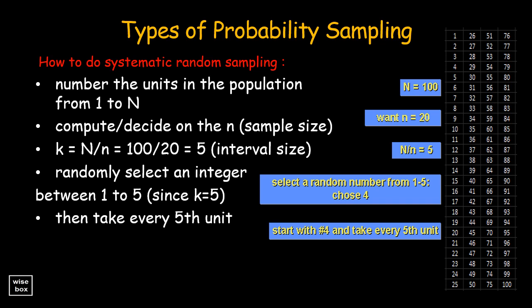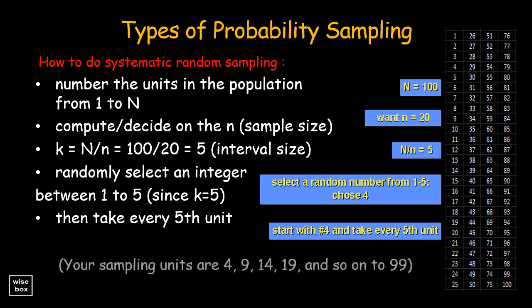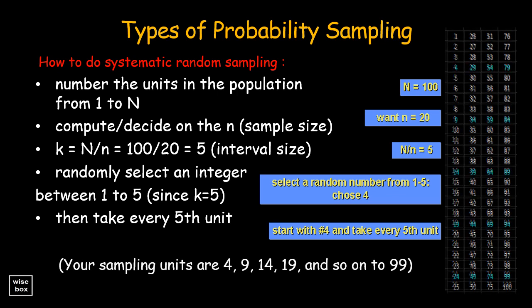You would be sampling units 4, 9, 14, 19, and so on, up to 99. And you would wind up with 20 units in your sample using systematic random sampling.